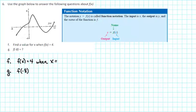Use the graph below to answer the following questions about f of x. Part f: find a value for x when f of x is equal to 4. And in part g, find f of negative 8.